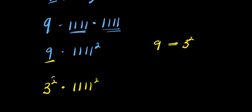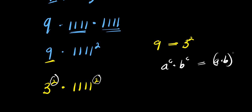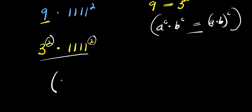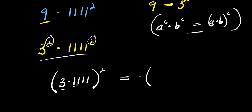Right now, as you can see, this is power two and this is power two. If you have a^c times b^c, this equals (a times b) raised to the power of c. Making use of this, we have three times 1111 raised to the power of two, which gives us 3333 raised to the power of two.